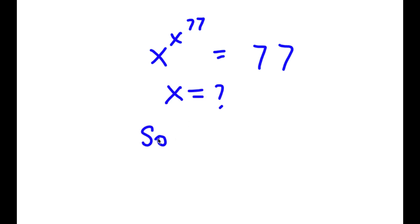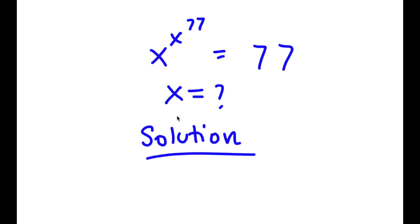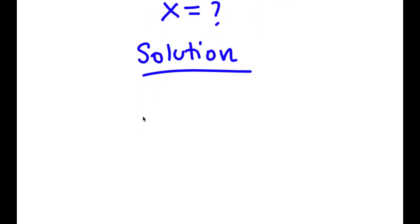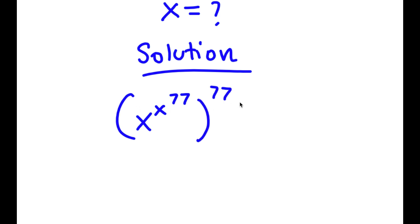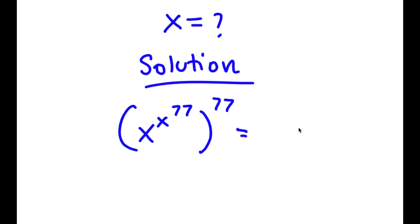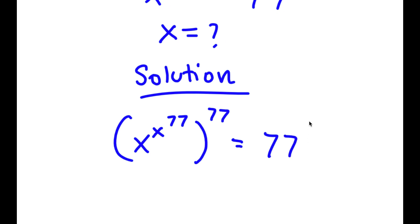For my solution, I'm going to first start by taking the power of 77 on both sides. So now I have x to the power of x to the power of 77, all to the power of 77, is equal to 77 to the power of 77.